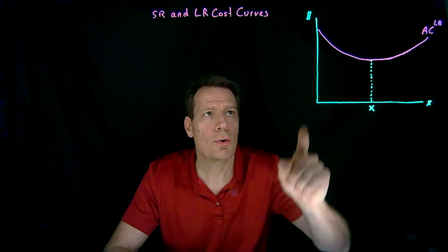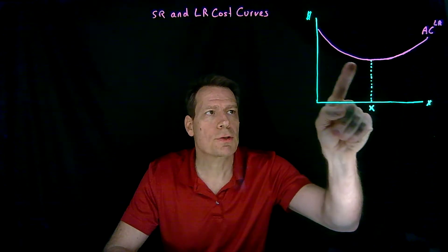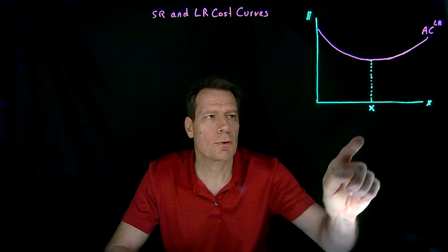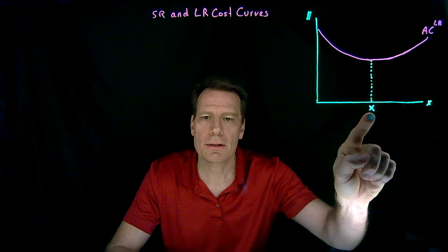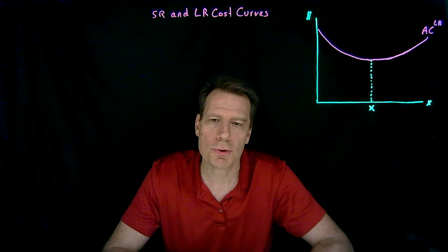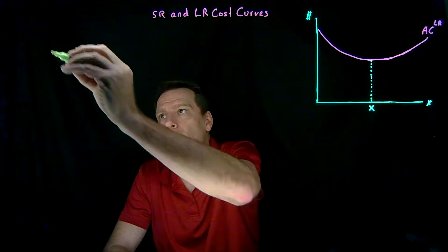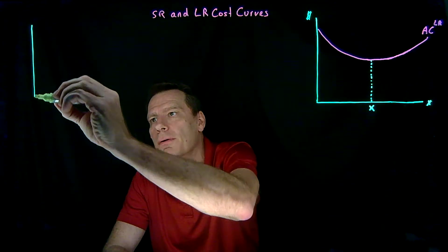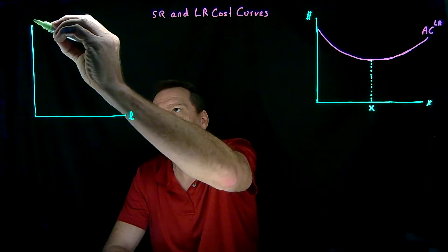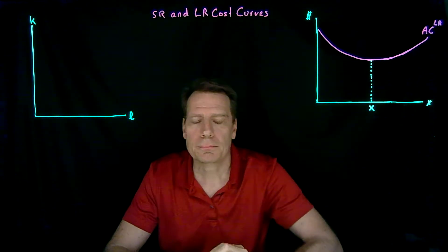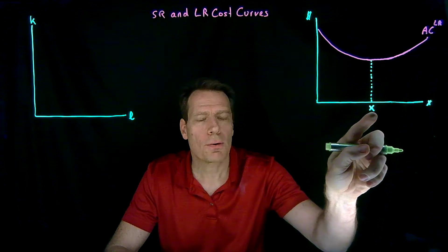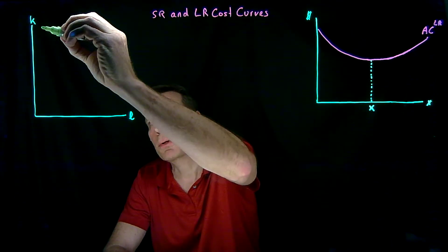Suppose we have a firm whose long-run average cost curve looks like this, and suppose that the firm is currently producing the quantity of output that happens at the lowest point of that long-run average cost curve. We can then go to our isoquant graph, where we put labor on the horizontal axis and capital on the vertical, and include the isoquant that corresponds to this level of output.